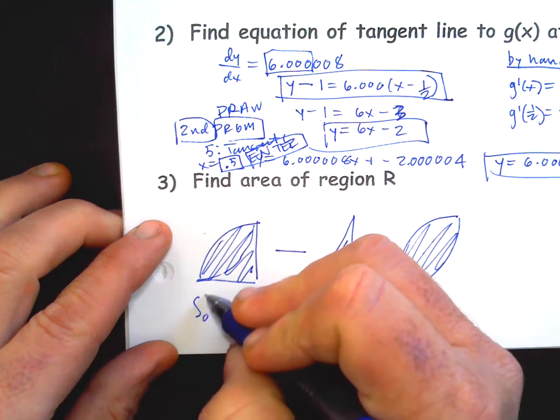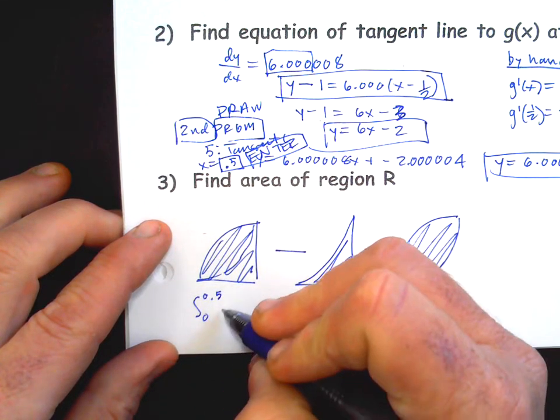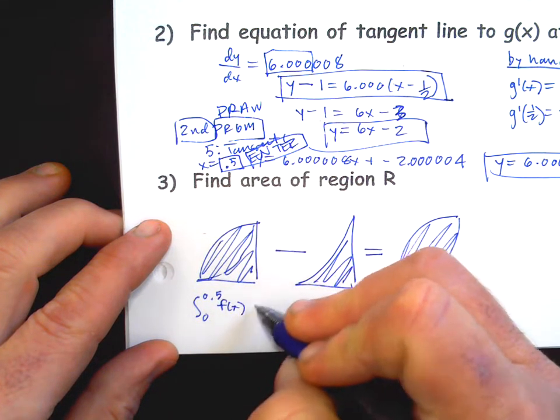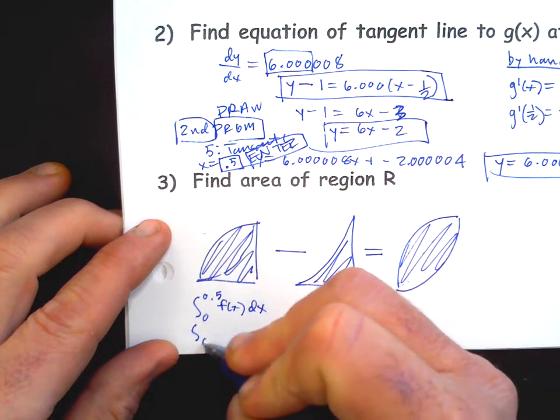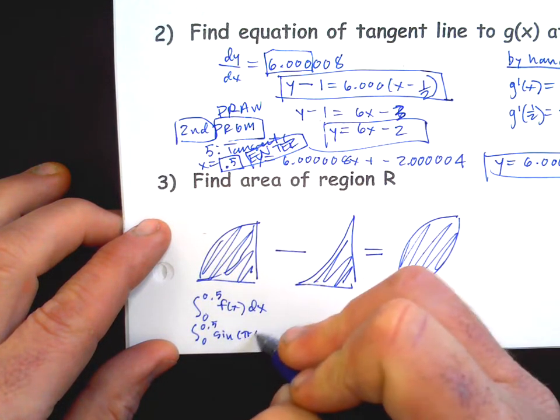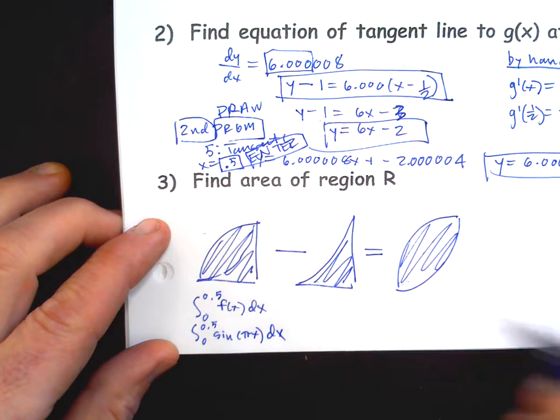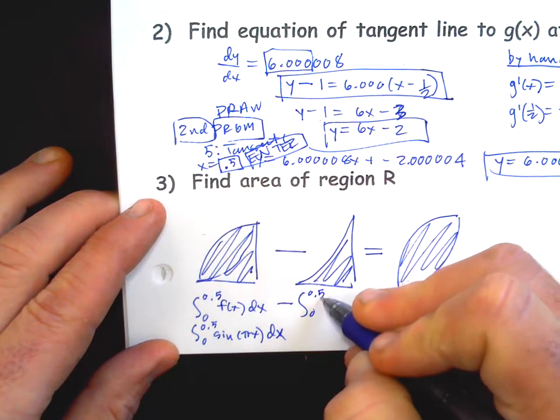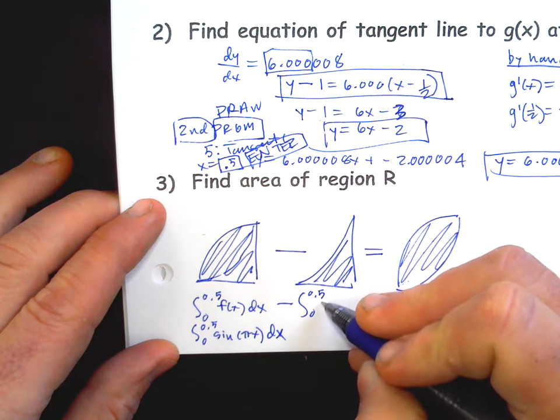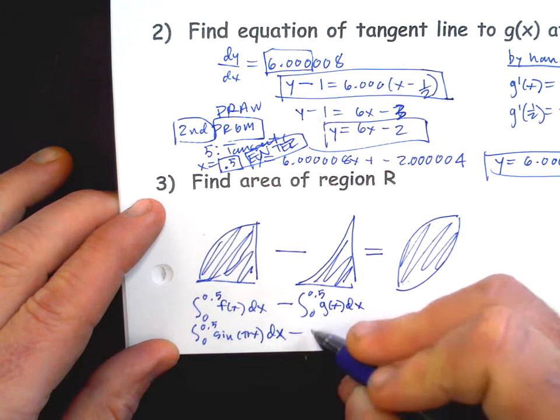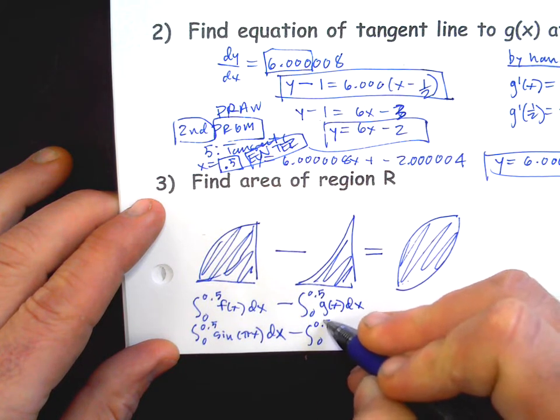Now I need the setup. So the setup for the first one is zero to zero point five of the sine curve f(x). You can just write f(x) if you want or you could write sine pi x, but you should write the dx. You gotta write the limits. Minus zero to point five of the g(x) curve which is the cubic. Now if you do these backwards it should be obvious because you're going to get a negative area which doesn't make sense.